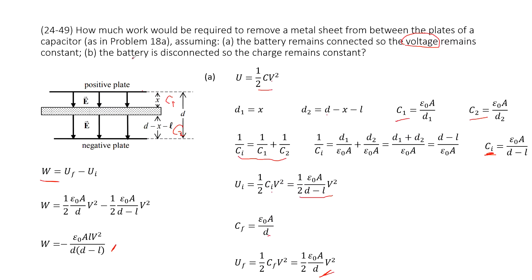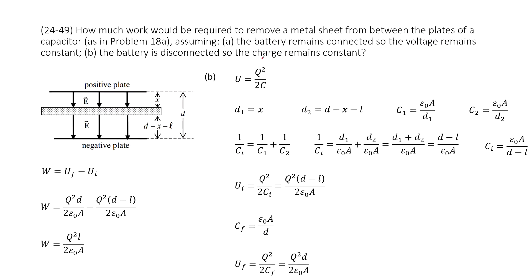The second part asks: the battery is disconnected and the charge remains constant. The keyword is charge remains constant. Very similarly, if we want to find the work needed, it equals the electric energy change. With charge constant, we write the electric energy as Q squared divided by 2C. We can get the initial capacitance the same way as in part A.